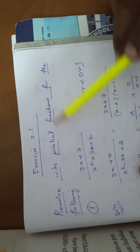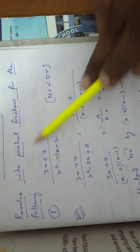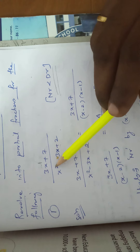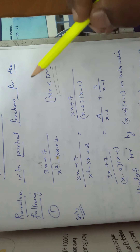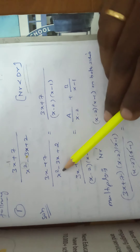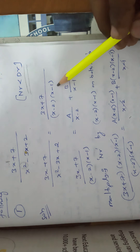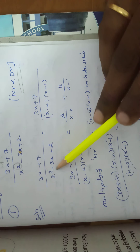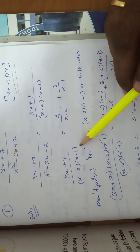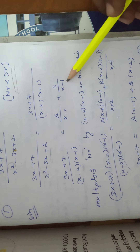Exercise 2.1: Resolve into partial fractions. Problem 1: (3x + 1)/(x² - 3x + 2). First, check that the numerator degree (1) is less than the denominator degree (2) — confirmed. Factorizing the denominator: x² - 3x + 2 = (x - 2)(x - 1). So (3x + 7)/[(x - 2)(x - 1)] = A/(x - 2) + B/(x - 1), using non-repeated linear factors.